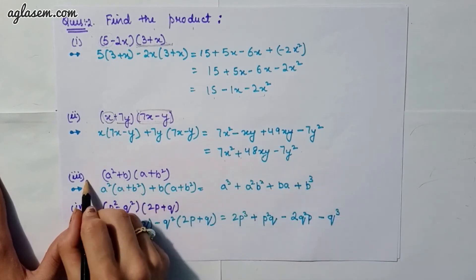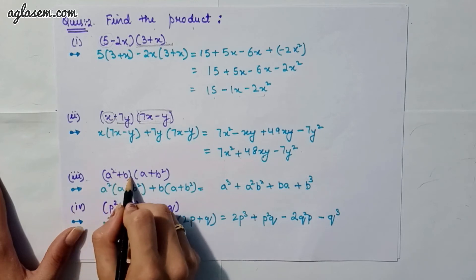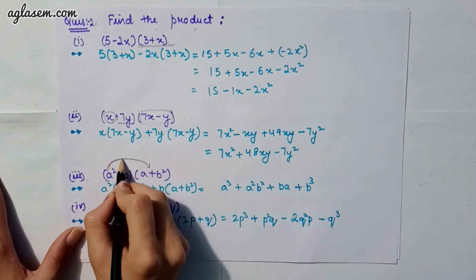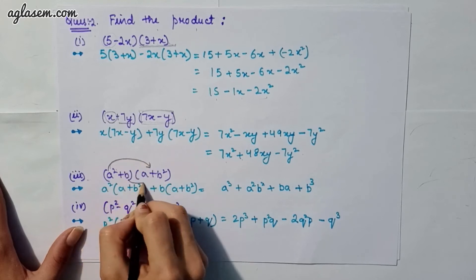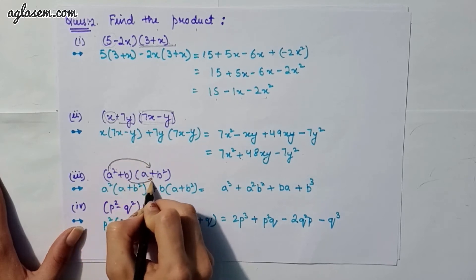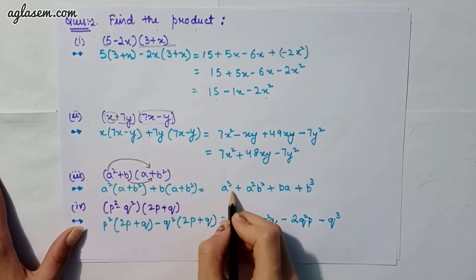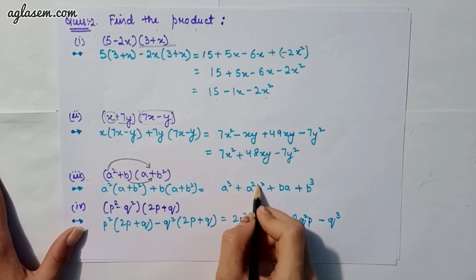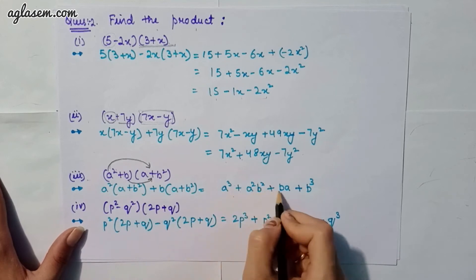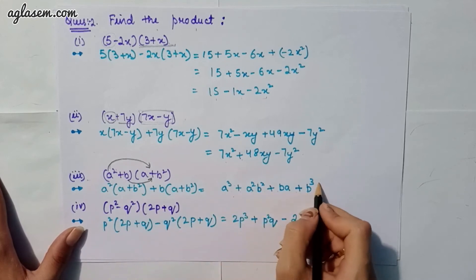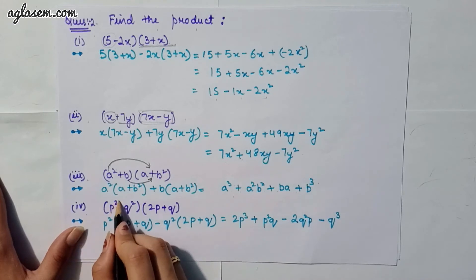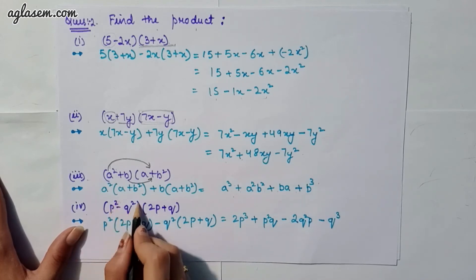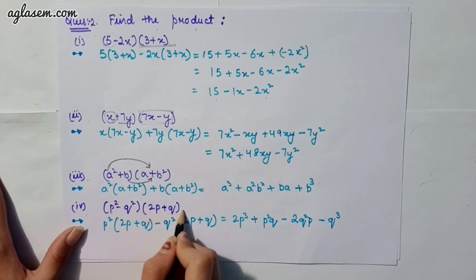The third part says (a² + b) and (a + b). This a² will be multiplied by this whole bracket and this b will be multiplied by this whole bracket. So our answer will be a³ + a²b + ab + b².